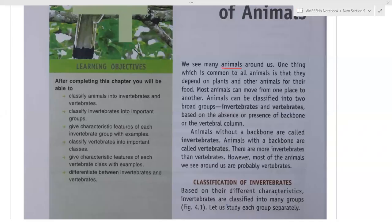Hello everyone. I hope you all are fine. In the previous two sessions on classification, we have already studied about classification of the living world with basic knowledge, and classification of plants. Today we are going to read a very interesting and important topic in biology up to class 12th — it is classification of animals. The kingdom Animalia is divided into two broad groups: invertebrates and vertebrates.